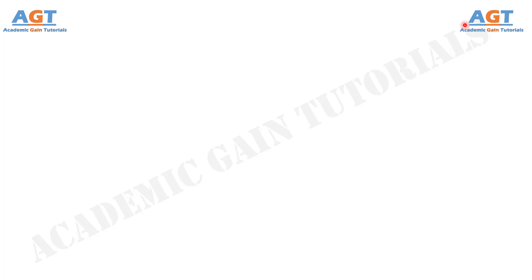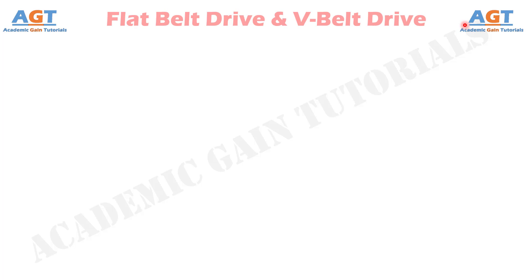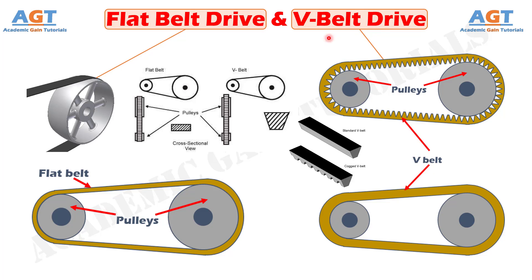Welcome to academic game tutorials. In this video, we will look into the differences between flat belt drive and V-belt drive. A flat belt has rectangular cross-section where width is significantly larger than thickness. It uses a cylindrical pulley where the bottom surface of the belt comes in contact with the outer surface of the pulley.